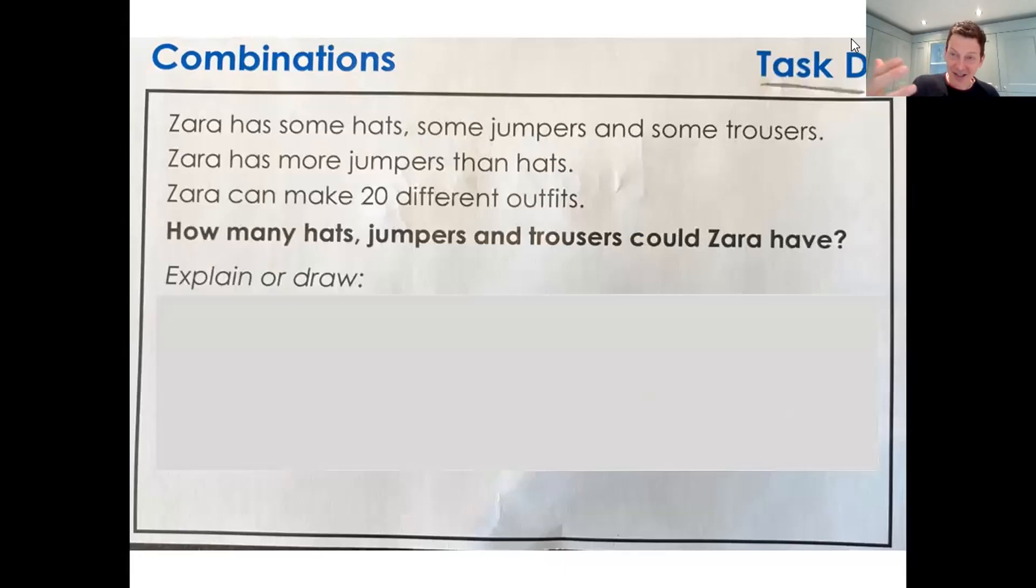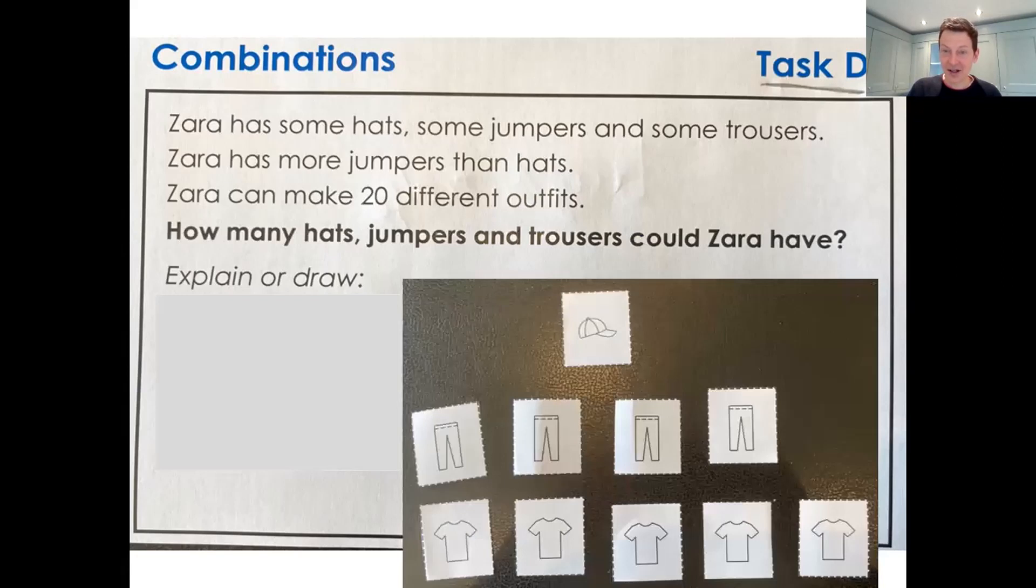And then Lily actually managed to move on to this task and going deeper still. So Zara has some hats, some jumpers, and some trousers. Zara has more jumpers than hats. Zara can make 20 different outfits. How many hats, jumpers, and trousers could Zara have? I'll not relate the whole journey here, but in essence, we have the pictures of the hats, the trousers, the jumpers. She makes lots of different combinations. She starts off with one hat and actually she kept one hat and then found different combinations. And then she started to connect this idea of the multiplication. And actually, if there's one hat, I need to find combinations to make 20.